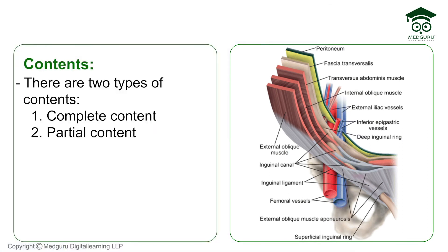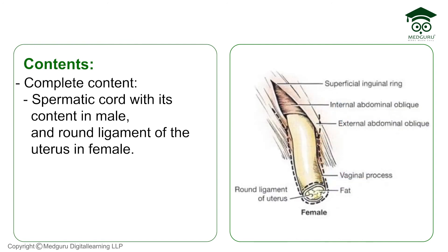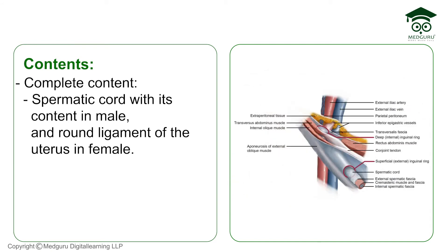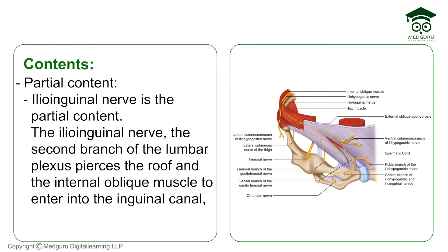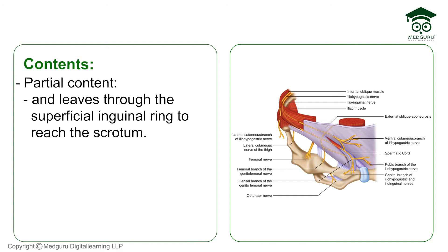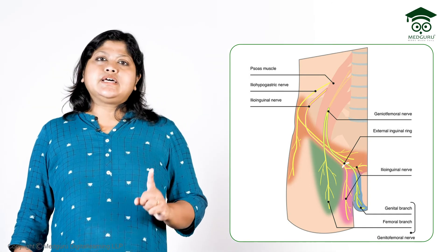The contents of the inguinal canal include complete and partial contents. The complete content is the spermatic cord in males and the round ligament of the uterus in females. The partial content is the ilioinguinal nerve — the second branch of the lumbar plexus — which pierces the roof through the internal oblique muscle to enter the canal and leaves through the superficial inguinal ring to reach the scrotum.